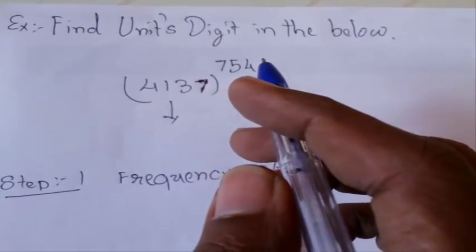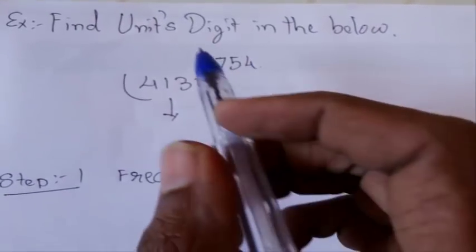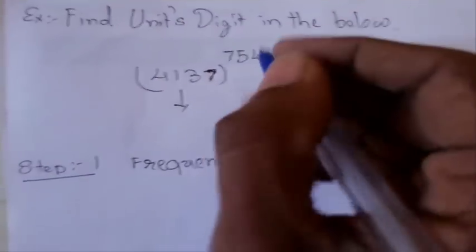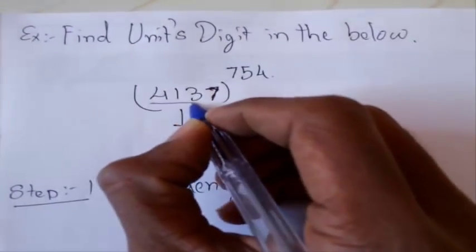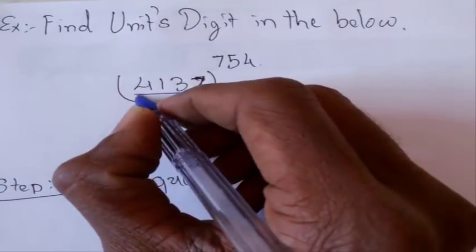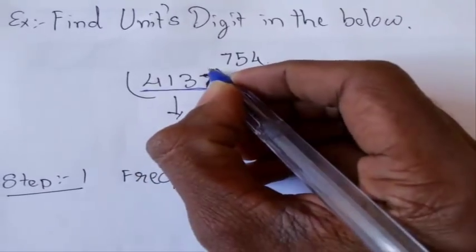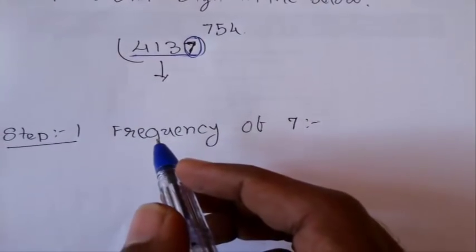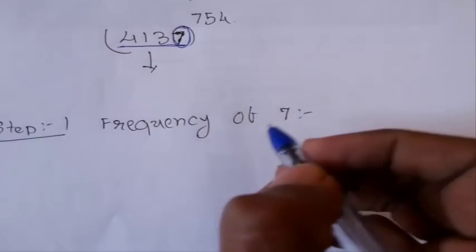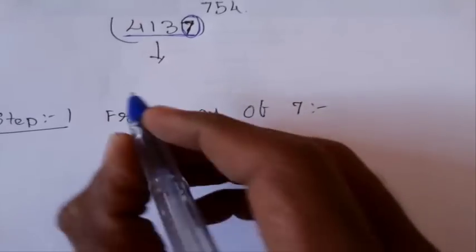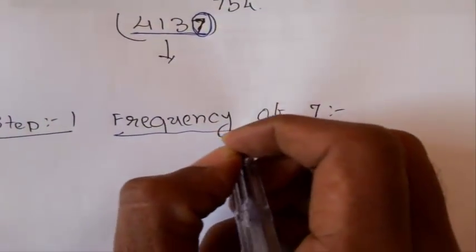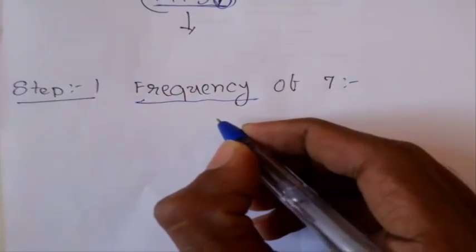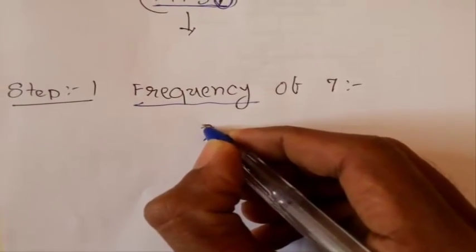Without finding out the whole answer, there is a shortcut method we can use to find out what will be the units digit. There are two steps. First, note down this number and find out the units place in this number, which is 7. So the first step is we need to find out the frequency of this 7. We'll see now what this frequency means and how to find it.